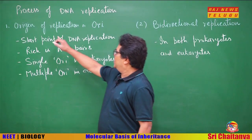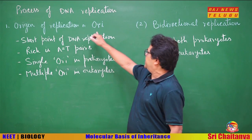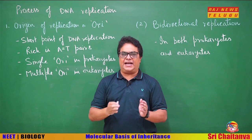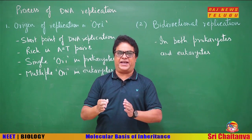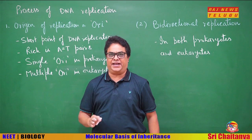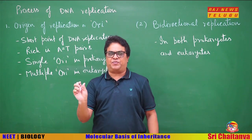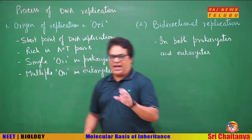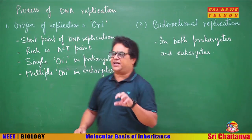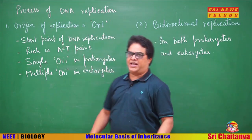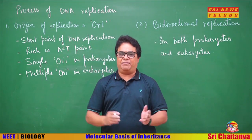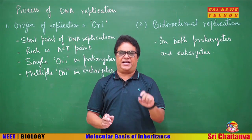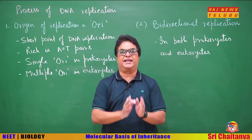So, the first thing is origin of replication, or ORI. Replication of a DNA does not start at any random point. In the DNA, there are specific sequences that are rich in AT base pairs, and these sequences are called the origin of replication or ORI. DNA replication always starts at the ORI. If a DNA lacks ORI, it cannot replicate.